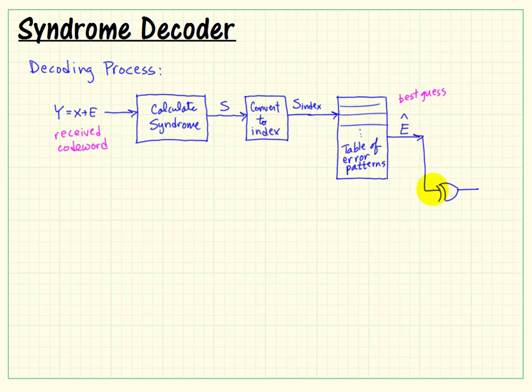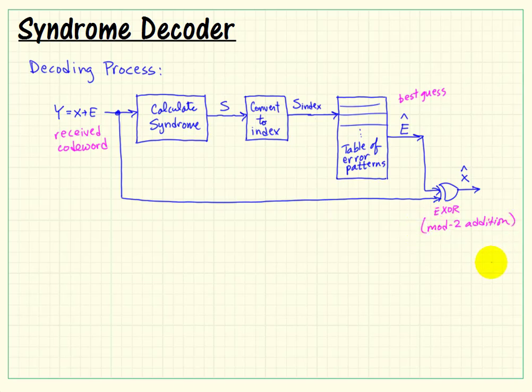If we then modulo 2 add this best guess error pattern to our received codeword, that gives us our best guess at the corrected value. So modulo 2 addition would also be the same thing as an exclusive OR gate. And again, the exclusive OR gate here would be operating in a bitwise or vectorized fashion. And that produces our corrected codeword.